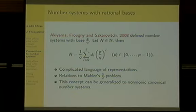It turns out, as observed by these three people, that the language of representation of the integers is very complicated — it is not context-free, so you cannot say much about it. This makes life much more complicated with rational bases. Interestingly, they found a relation to Mahler's 3/2 problem, and using their notion of number systems they could even prove some new results on a generalized version of Mahler's 3/2 problem.